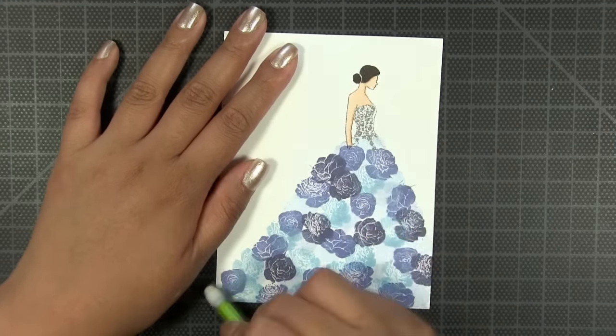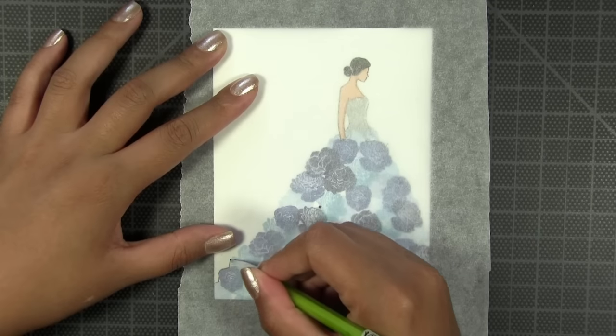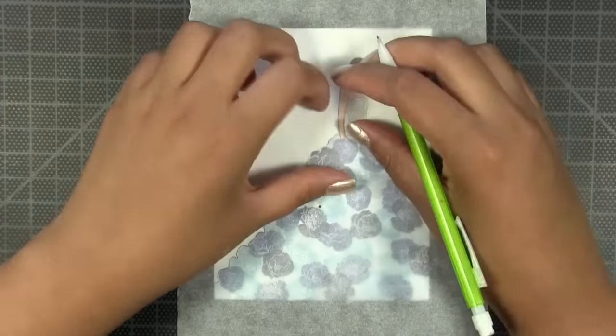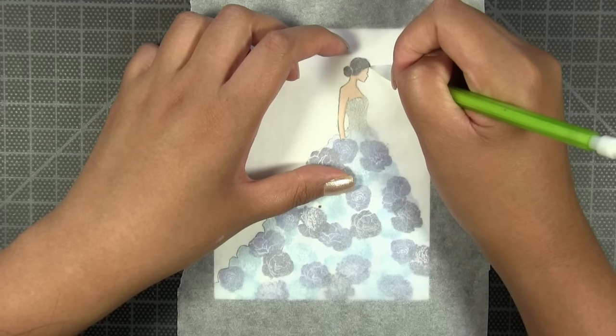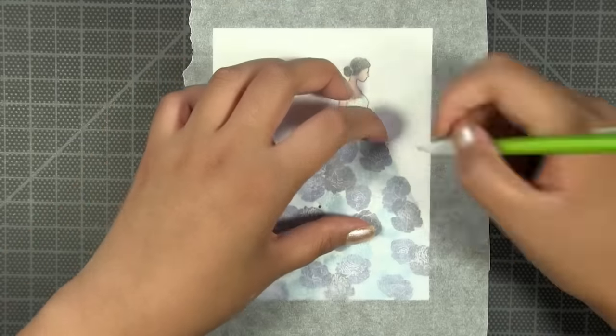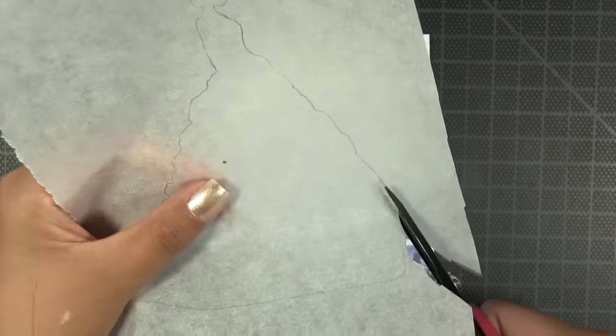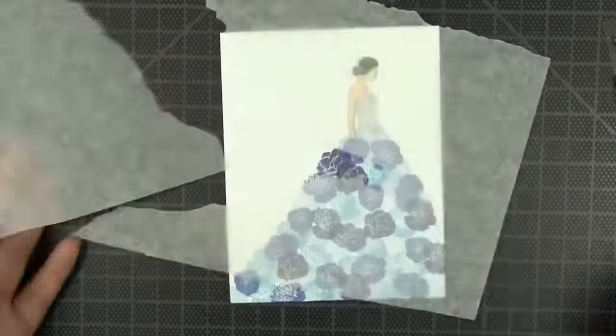Next I'm going to erase all of the pencil lines and then create a mask for my stamped image. To create a mask for an intricate image, I use a piece of tracing paper and I'm just going to basically draw an outline of my entire stamped image and then fussy cut the entire thing.